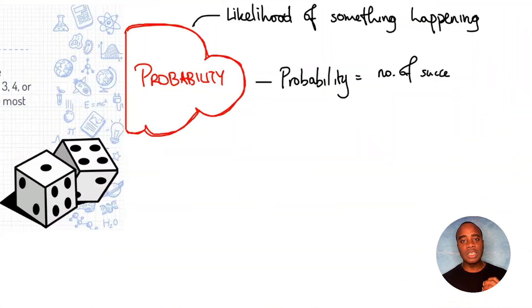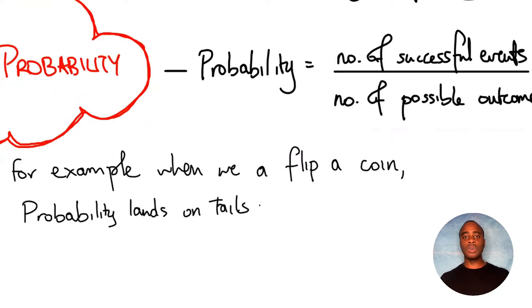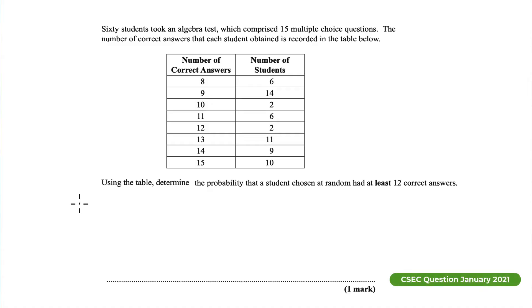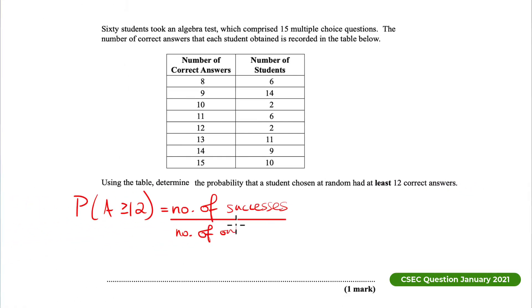The fourth formula is probability. Probability is equal to the number of successes divided by the number of outcomes. It puts a value on the likelihood or chance of something happening, so we use it when finding the likelihood of an event. You also have to be very careful when looking for things like 'at least so-and-so' or 'at most so-and-so,' because you have to look carefully at what those probabilities are.